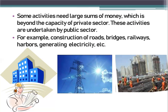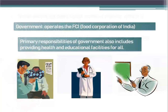Similarly, the government in India buys wheat and rice from farmers at a fair price, stores it in godowns, and then sells it at a lower price to consumers through ration shops. The government bears some cost for this, but in this way it supports both the farmer and the consumer.